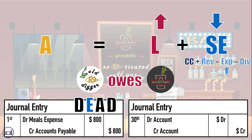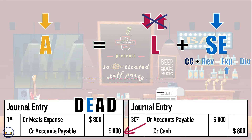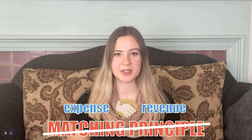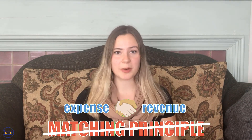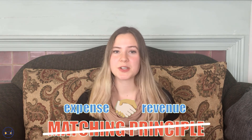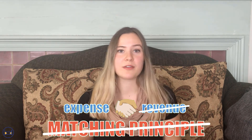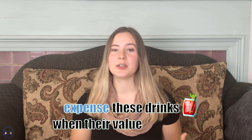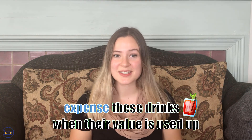Next week, when we pay off this tab, we'll debit our accounts payable and credit cash for $800. This entry wipes out the liability, so the net effect of the two journal entries is an $800 increase in expenses and an $800 decrease in cash. Notice that we don't use the matching principle here. Because we use the staff party to boost employee morale, we can't trace it back to a specific project or revenue that it helped us to earn. Instead, we'll expense these drinks when their value is used up — or in this case, slammed back.